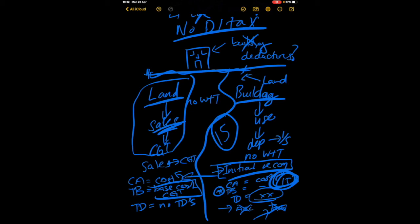If there's no temporary difference, Paragraph 15 could not apply in any case because we don't have a temporary difference. That's why you can have one property but when we separate it into the two parts and look at the underlying tax consequences, we can have Paragraph 15 applying to the building but not to the land. I hope that explanation was useful and I will see you in the next video.